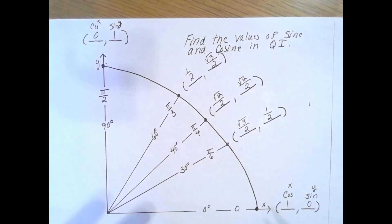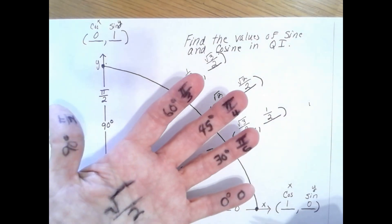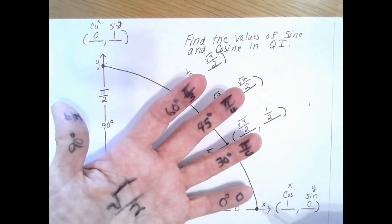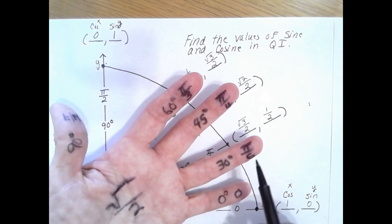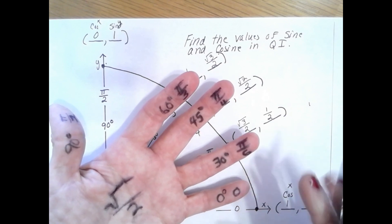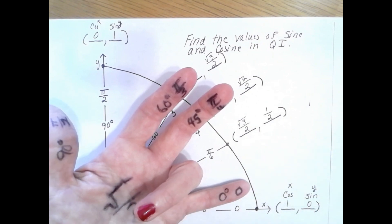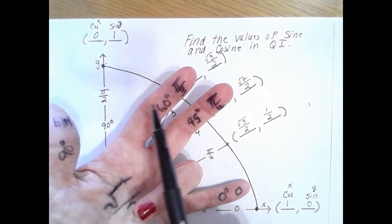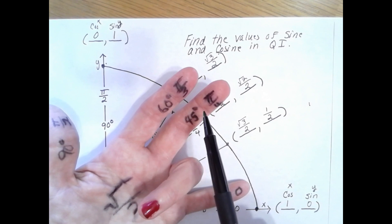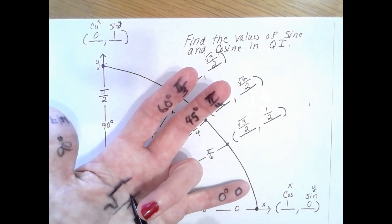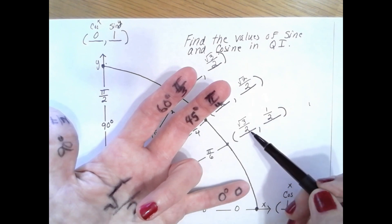Let's look at the other angles and pull the hand back down. If I'm going to look at 30 degrees or π over 6, to find the values I'm going to pull this finger in and I'm going to see that on the left side I have 1, 2, 3 fingers. So the square root of 3 over 2 is going to be cosine.